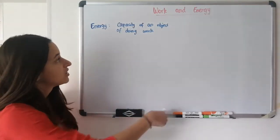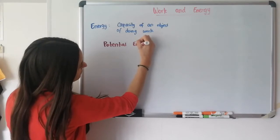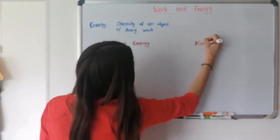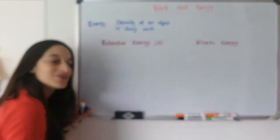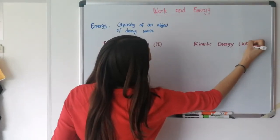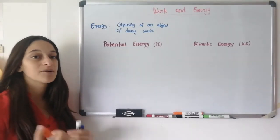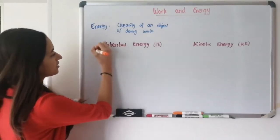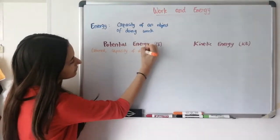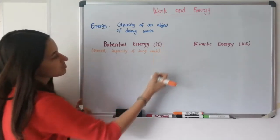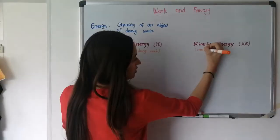There are two basic types of energy: potential energy (PE) and kinetic energy (KE). Potential energy is energy that is stored and has the capacity for doing work but is not yet doing work — it is stored inside the body. Kinetic energy, because work involves motion, is energy that is already doing work — it is the energy of motion.